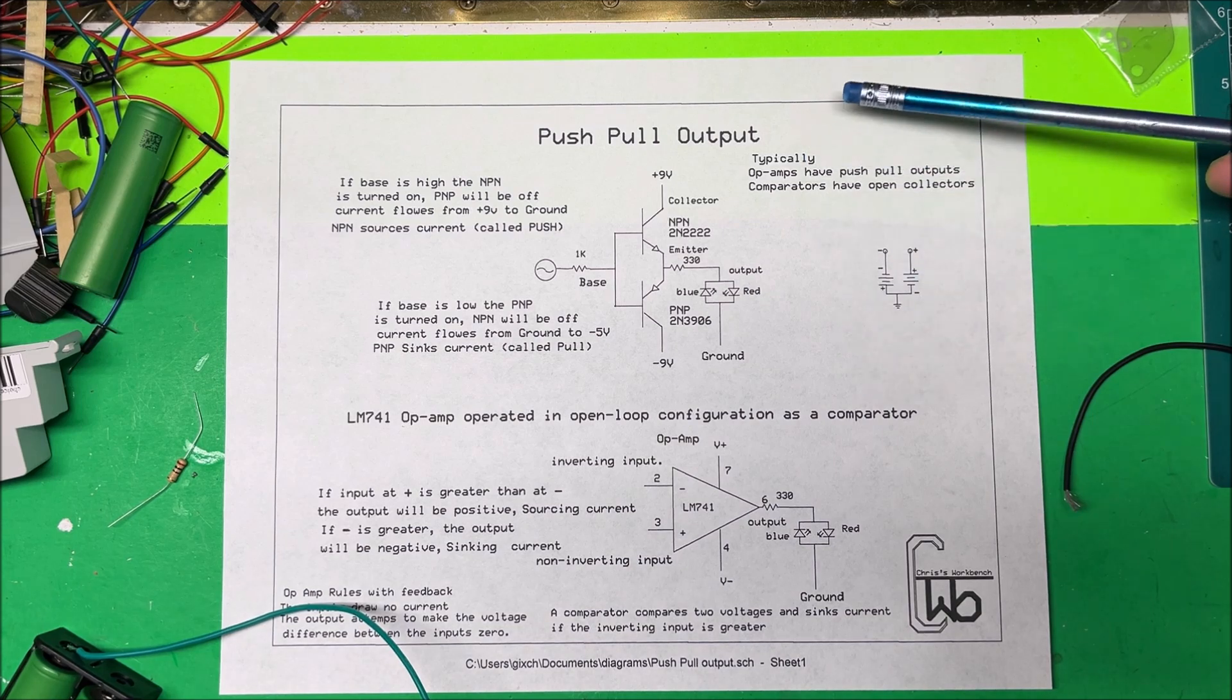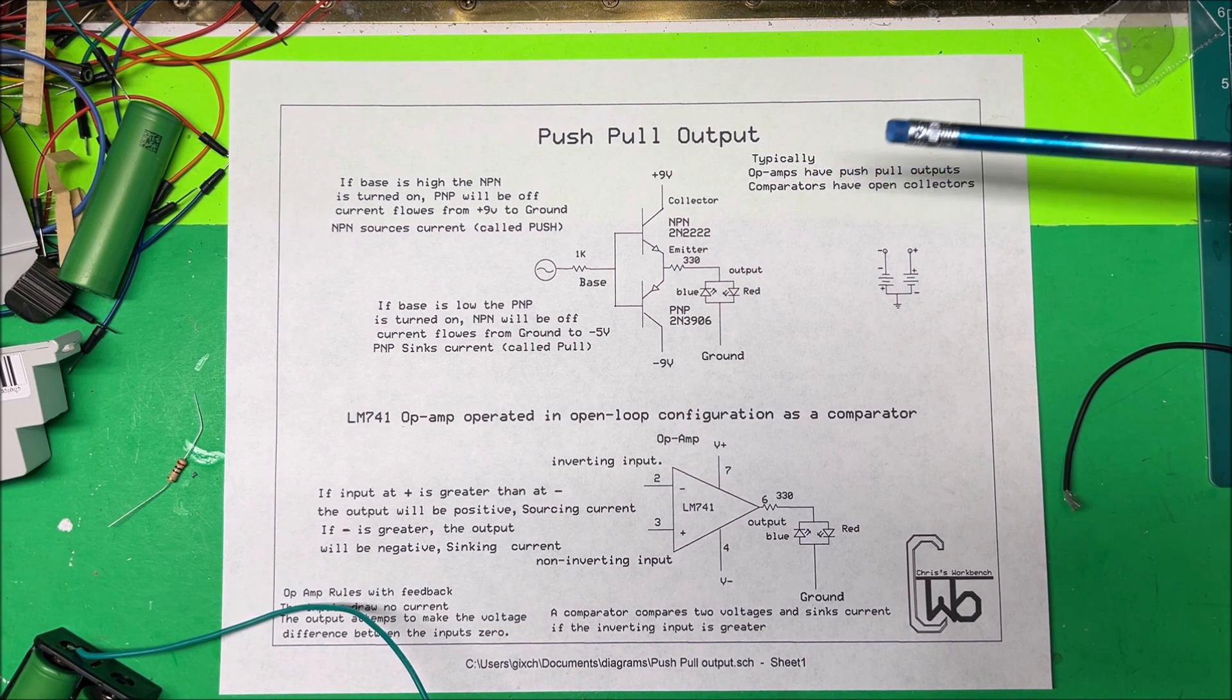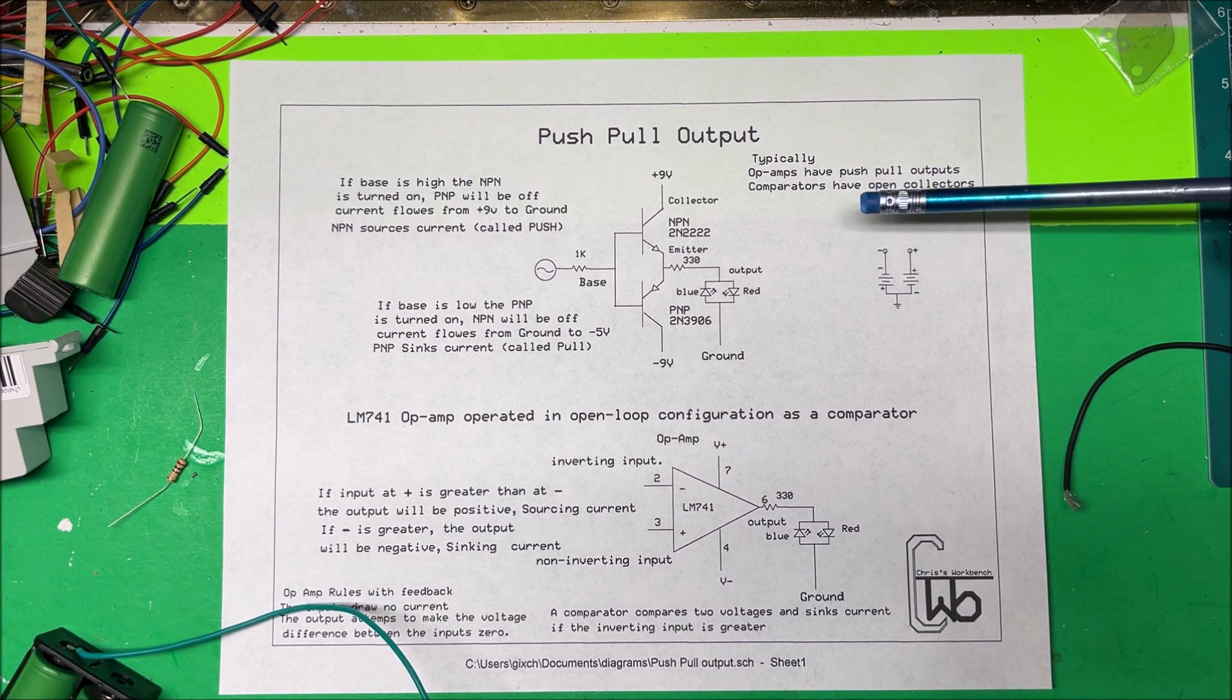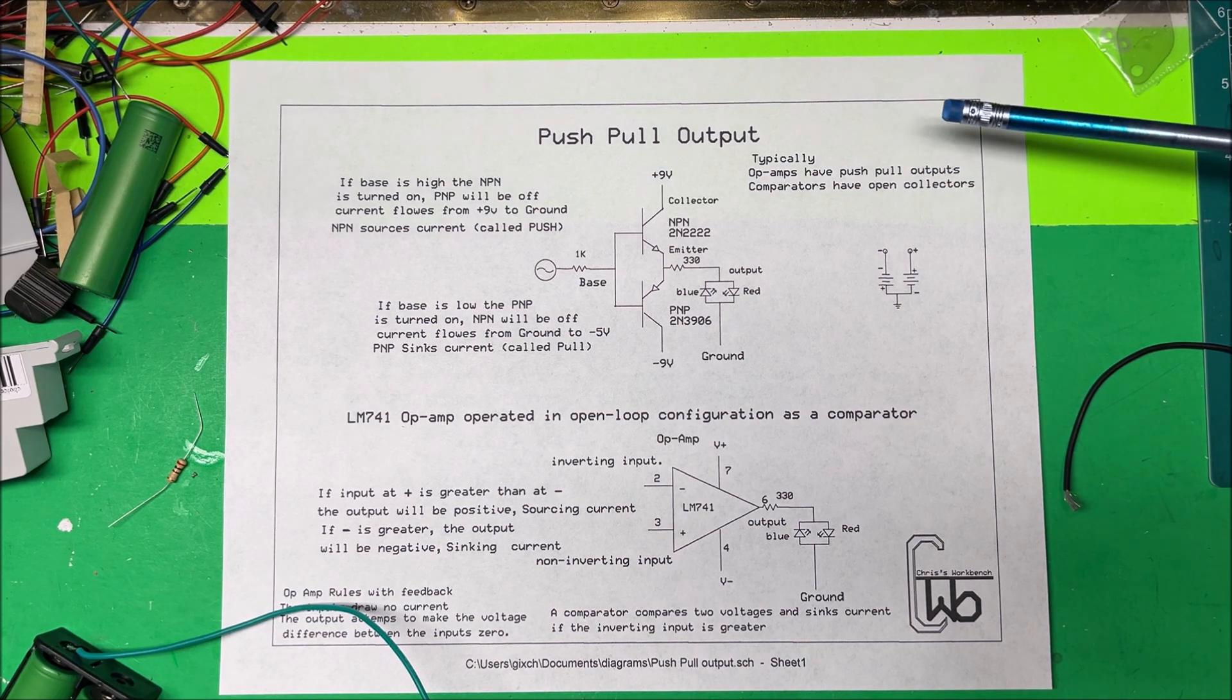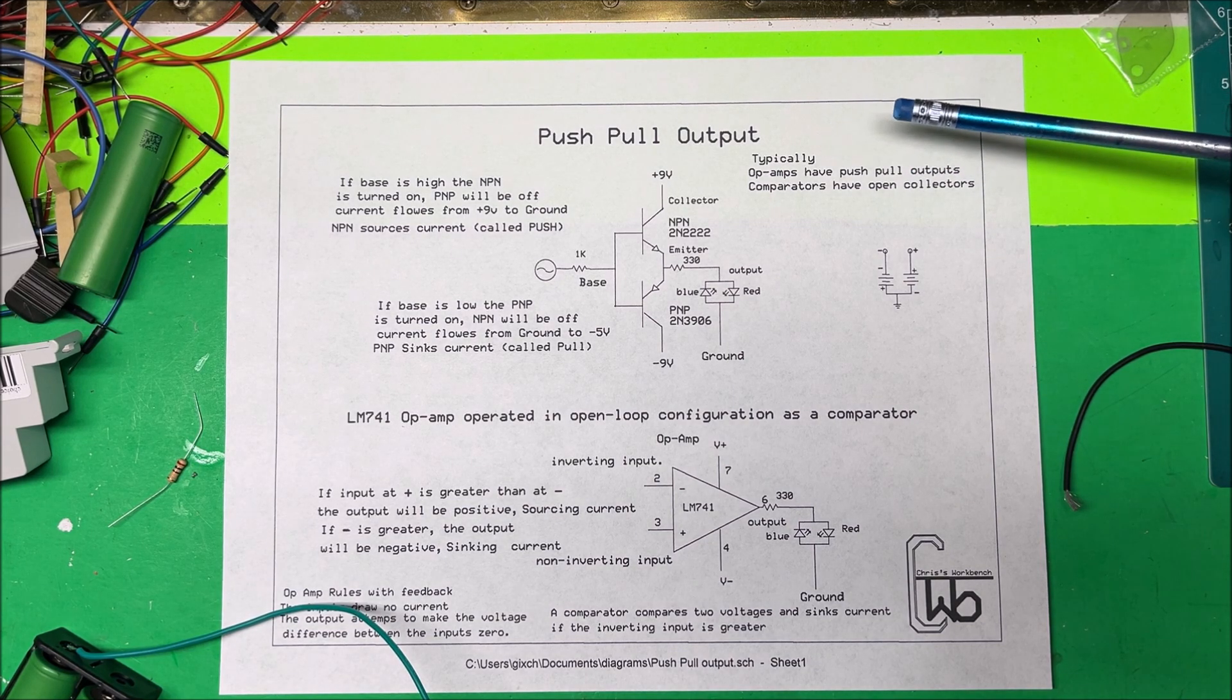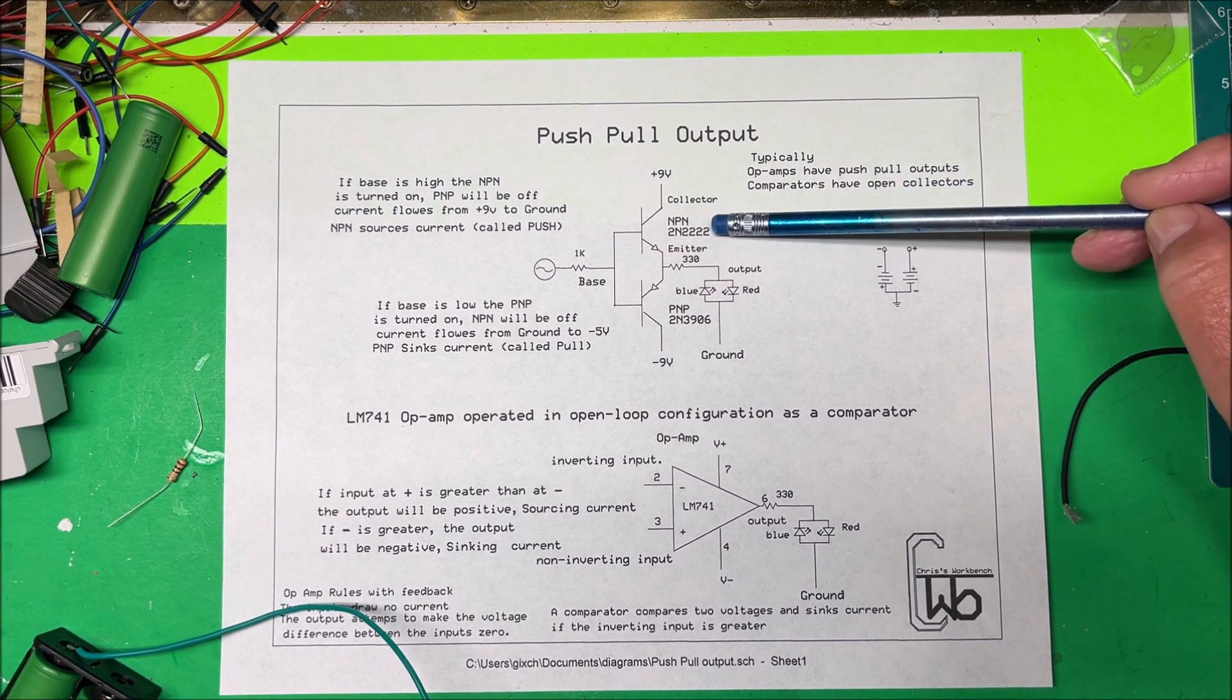Let's take a look at a push-pull output. In our last video we used comparators, and comparators typically have open collectors where they'll just sink current. If you need to source current you need to add an external pull-up resistor to it. Op amps typically have push-pull outputs, so we're going to take a look at a push-pull.